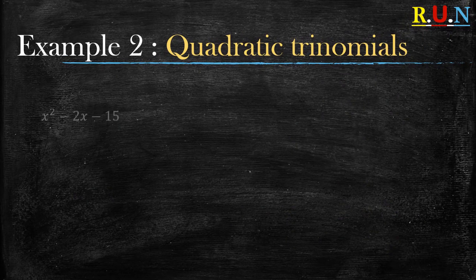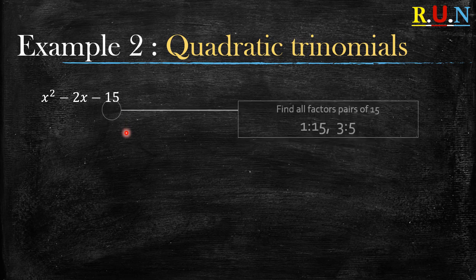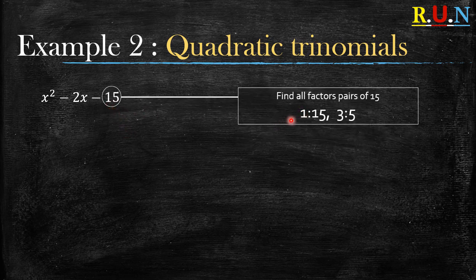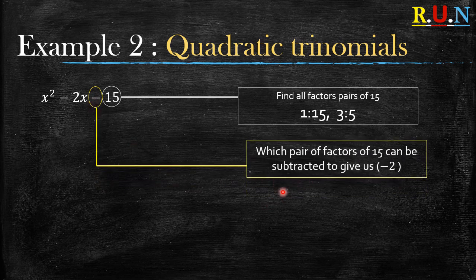Let's look at example number 2. What do you do when you have a question like this and you are told to factorize? Number 1: let's find all factors and pair all factors of 15. These are the paired factors of 15. What do we do next? We look at the sign. What sign is next to the 15? This time around it's a negative or minus sign. Which pair of factors of 15 can be subtracted to give us negative 2?